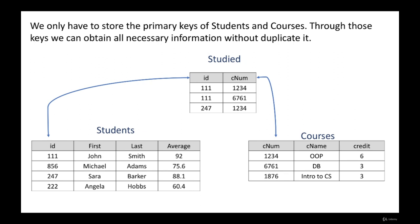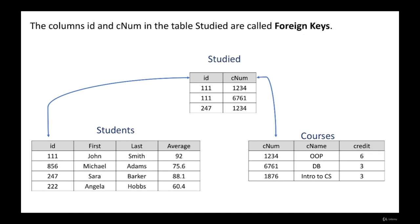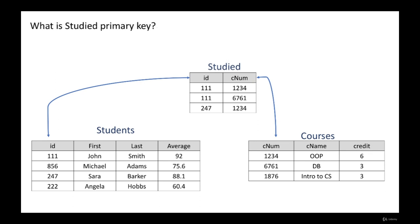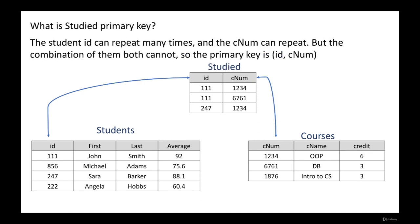If we want to know what course 1234 is, we follow the courses table, find CNUM 1234, and see it is OOP which gives six credit points. The columns ID and CNUM in the studied table are called foreign keys. A foreign key is one or more columns in one table that is defined as a primary key in another table. The ID in the studied table is the primary key in the students table, and the CNUM in the studied table is the primary key in the courses table.